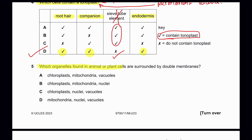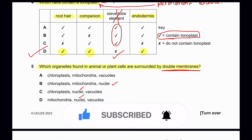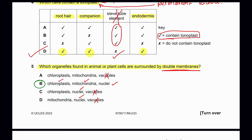Question 5: Which organelles found in animal or plant cells are surrounded by double membranes? Double membranes are found first in the nucleus. Vacuoles do not have double membranes, so options C and D are crossed out, and A is also crossed out. Double membranes are also found in chloroplasts and mitochondria — both contain double membranes in their outer region. So B is the correct answer.